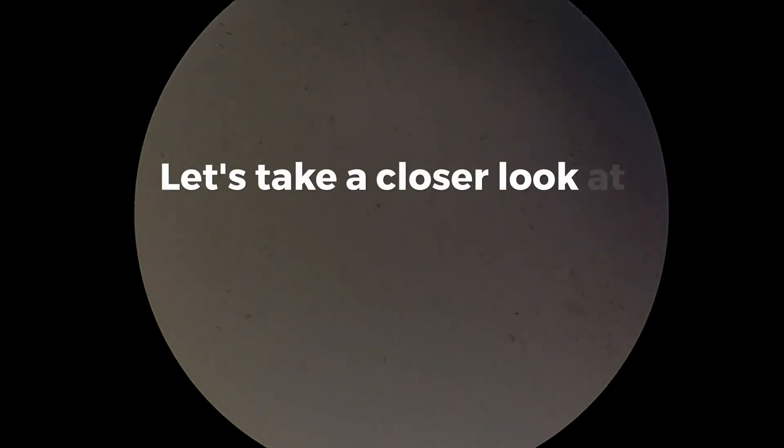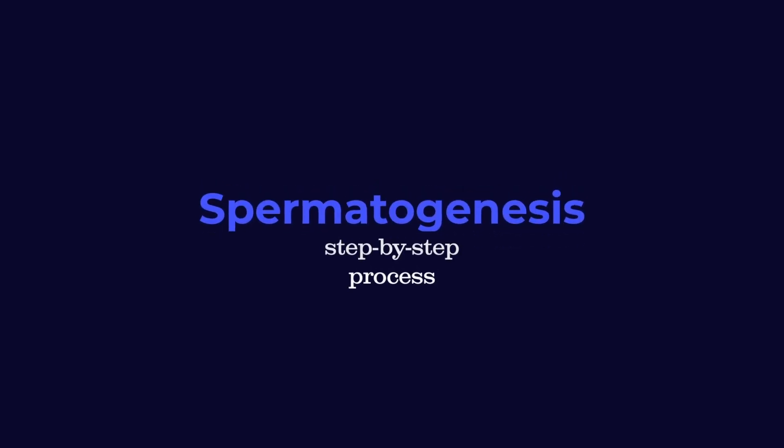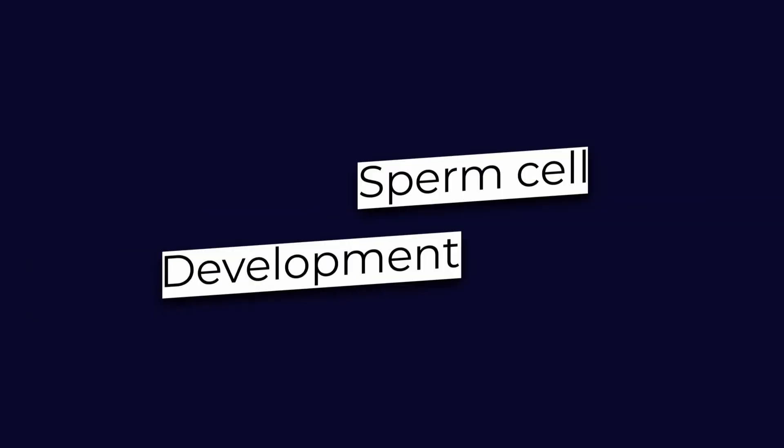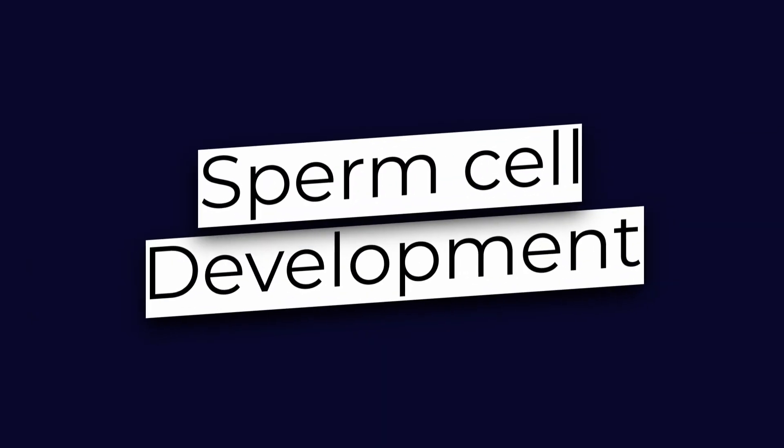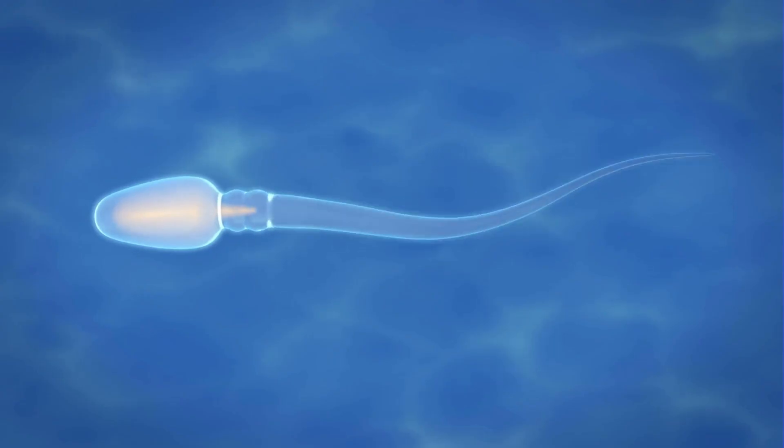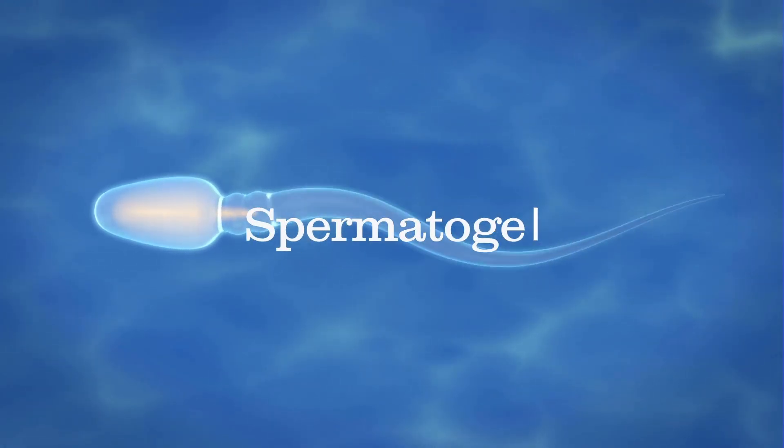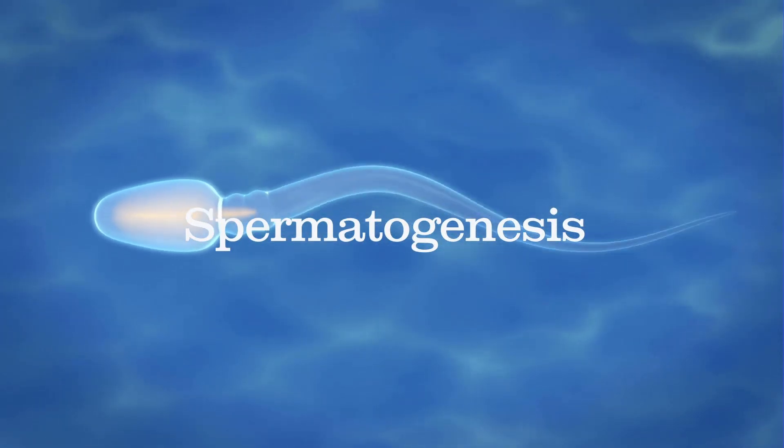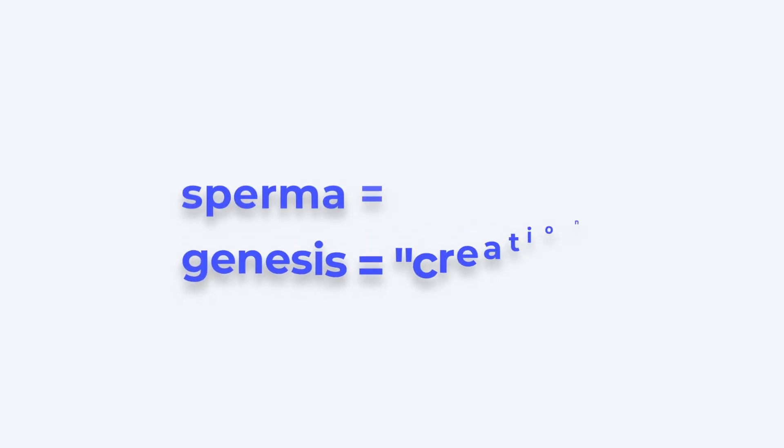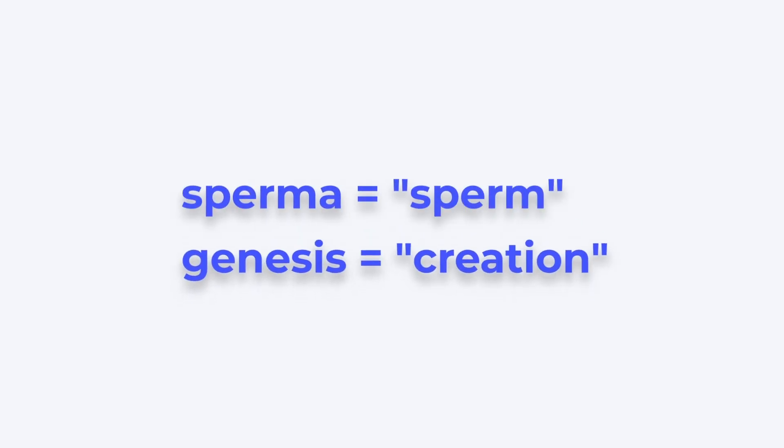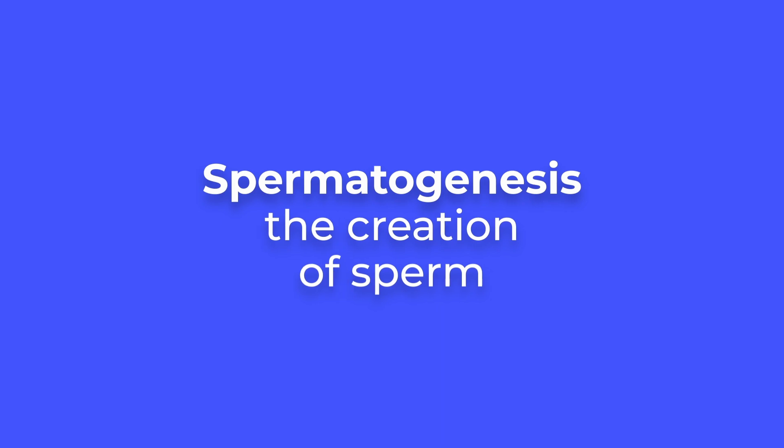Let's take a closer look at spermatogenesis, the step-by-step process of sperm cell development that happens inside the male body. The word spermatogenesis comes from Greek roots and can be broken down as follows: sperma means sperm, while genesis means creation. Spermatogenesis means the creation of sperm.